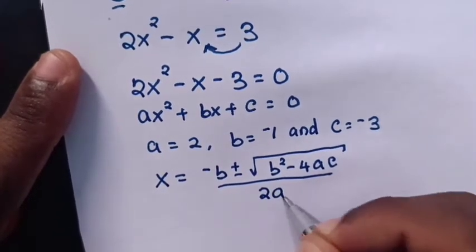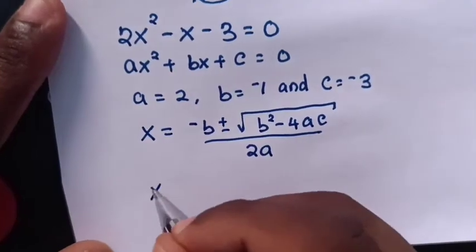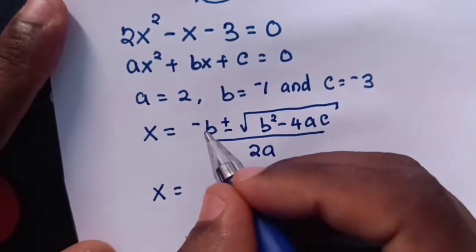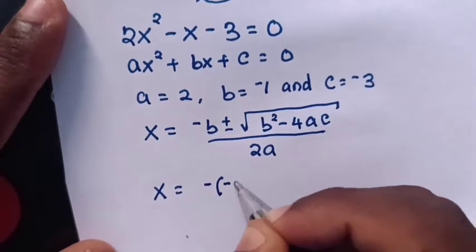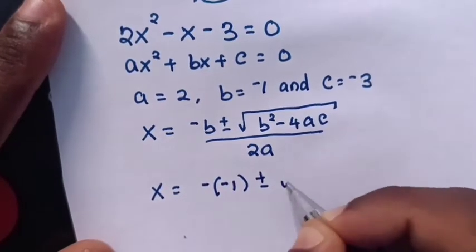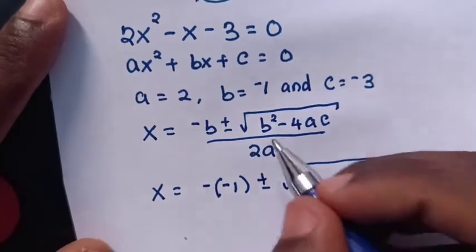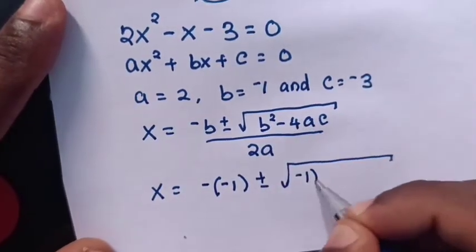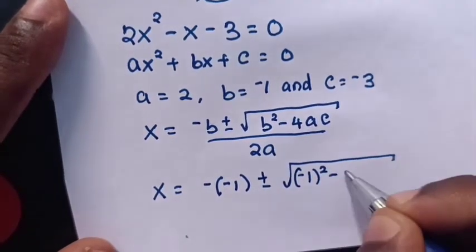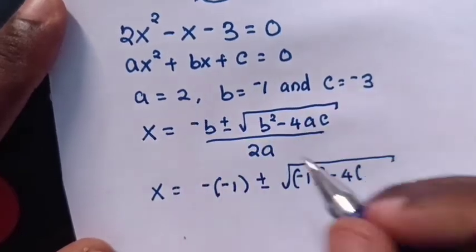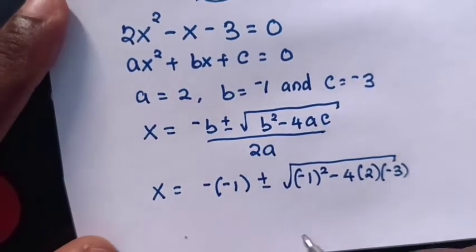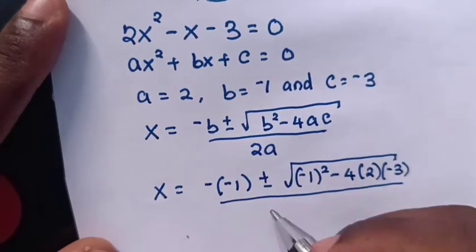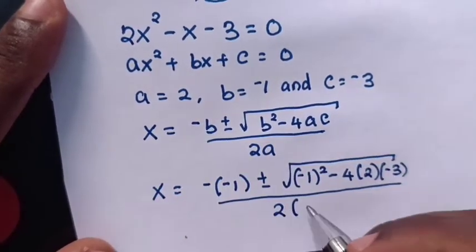So x equals negative of negative 1 plus or minus square root of negative 1 squared minus 4 times 2 times negative 3, over 2 times 2.